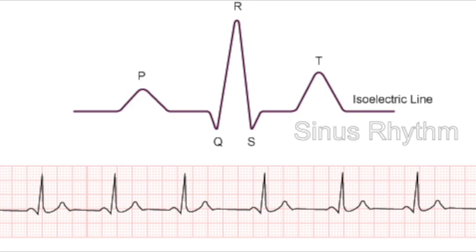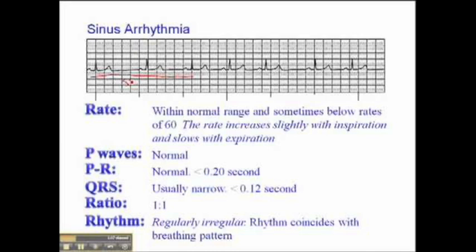Sinus rhythms originate at the SA node. Normal sinus rhythm: every P wave is followed by a QRS; P waves are positive and upright in leads 1, 2, and AVF, negative in AVR; rate 60-100. Sinus arrhythmia: irregular rhythm still from the sinus node — a normal variant of NSR meeting the same criteria except the rhythm is irregular. More common in children, young adults, and patients with sinus bradycardia. Beat-to-beat variation with respiration: rate increases with inspiration and decreases with expiration.